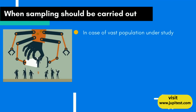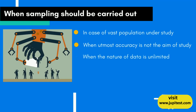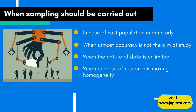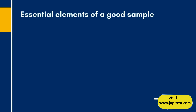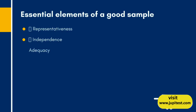Sampling should be carried out in cases of vast population under study, when accuracy is not the main aim of the study, when the nature of data is unlimited, and when the purpose of research is making homogeneity or where census is not possible.